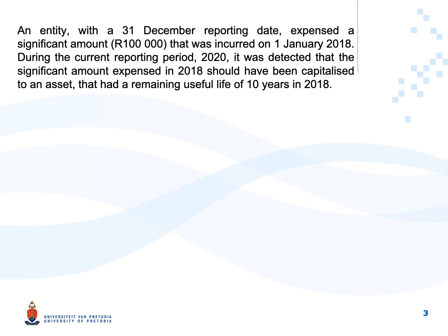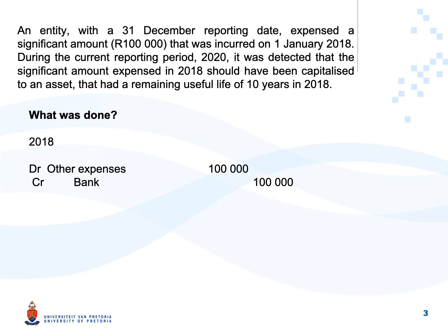Let's have a look at an example. An entity with a 31 December reporting date expensed a significant amount of 100,000 rand that was incurred on 1 January 2018. During the current reporting period, which is 2020, it was detected that the amount expensed in 2018 should have been capitalized to an asset, and that asset had a remaining useful life of 10 years in 2018. The first thing we need to do is determine what was done — in 2018, a journal was done: debit other expenses, credit bank, 100,000.